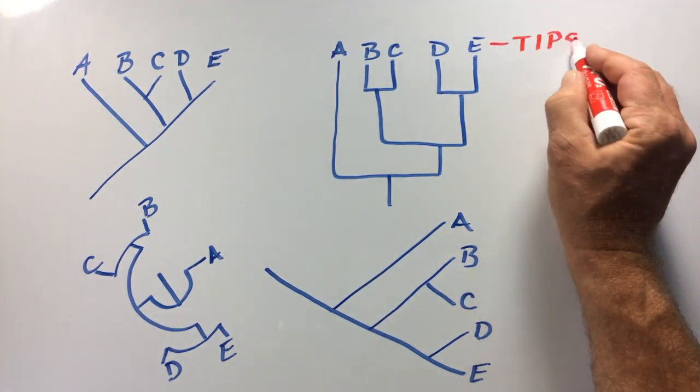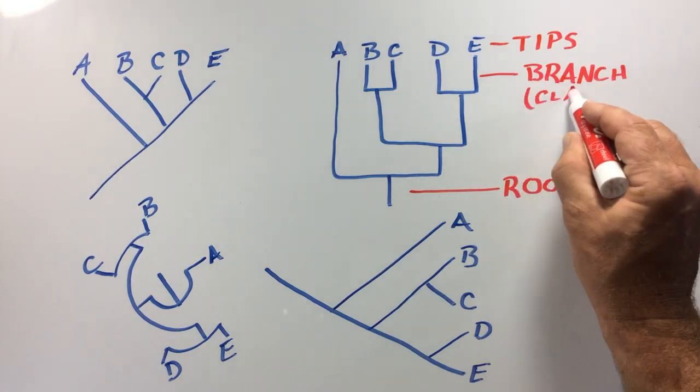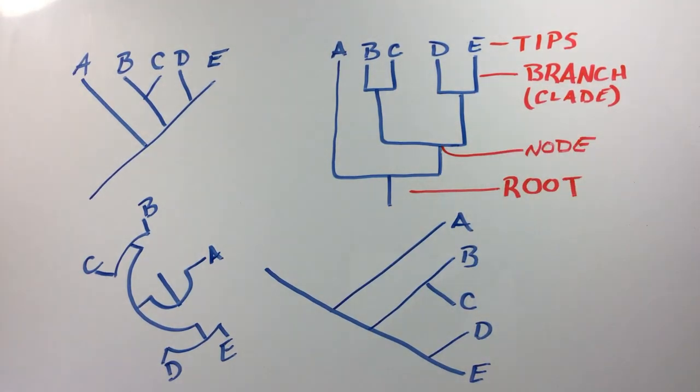Regardless of how the phylogeny is drawn, they are all made of the same parts. The ends are called the tips, the base is the root, the lines are branches or clades, and the points where the branches diverge from one another are called nodes.